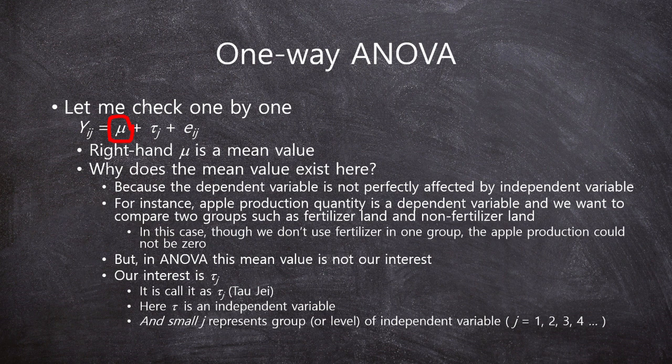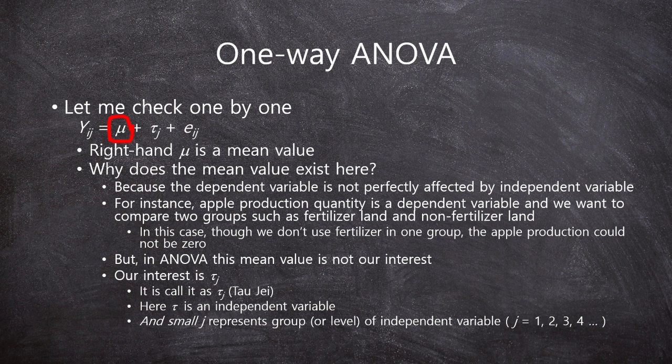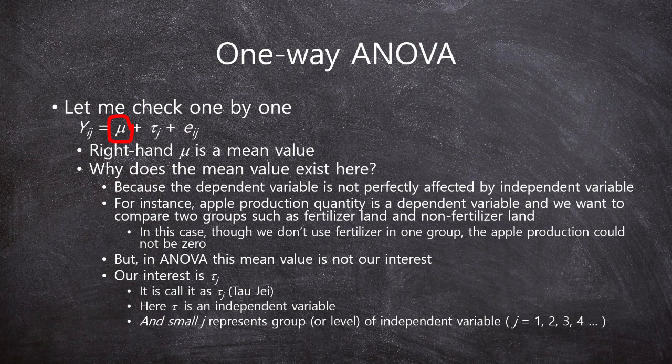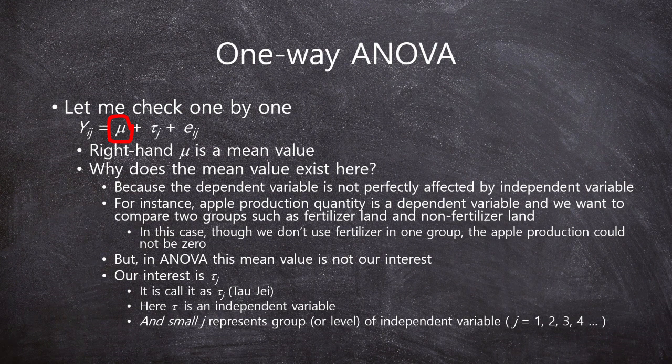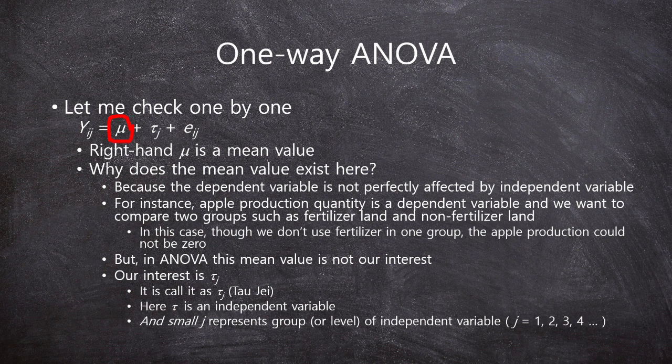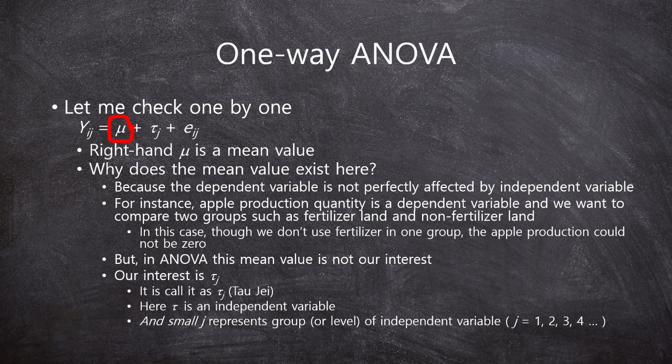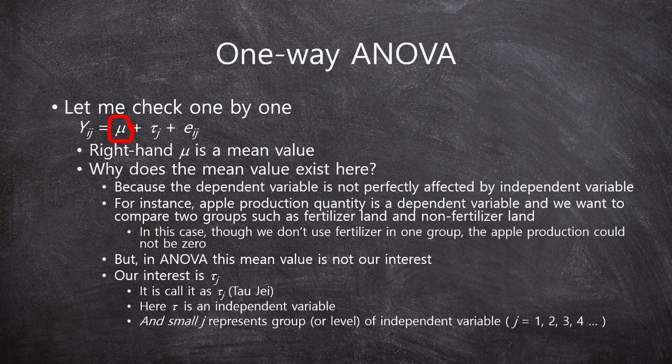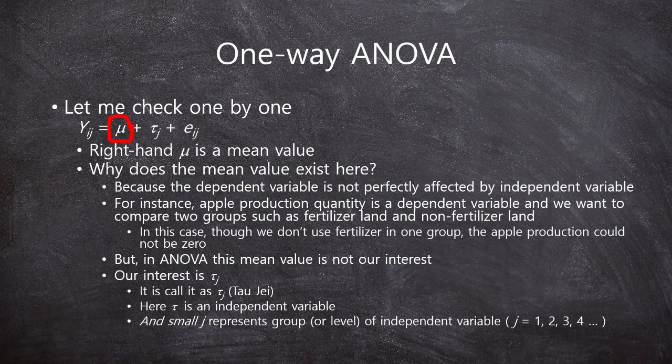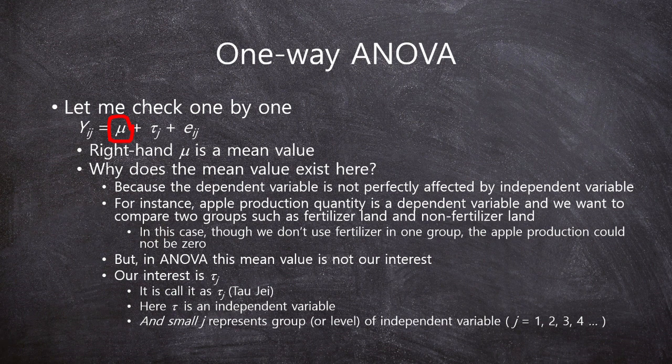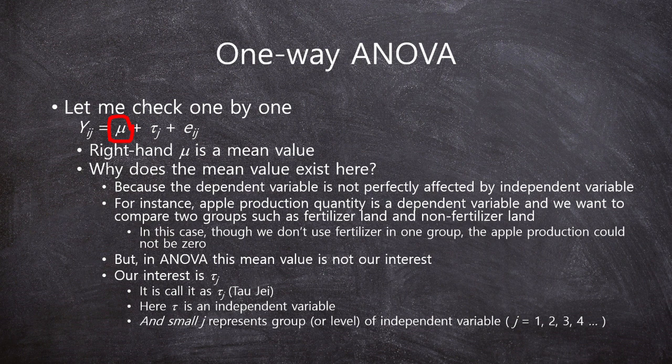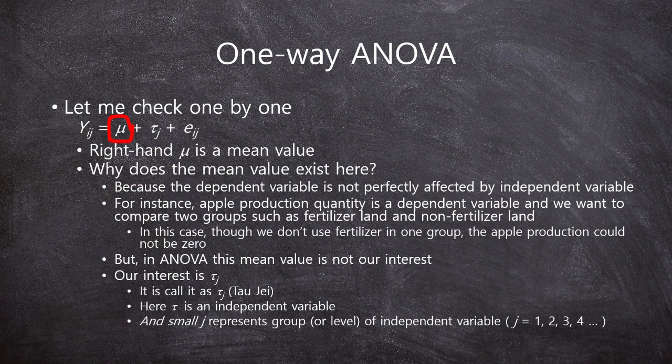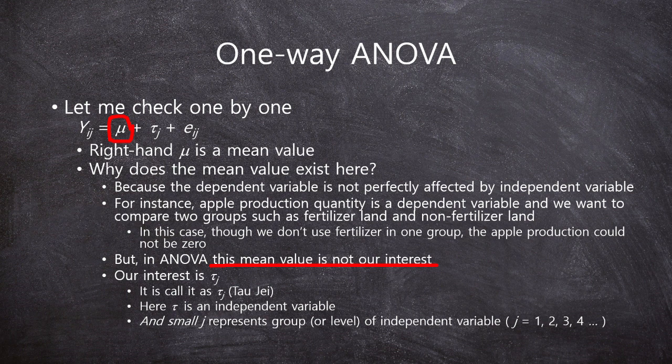Because the dependent variable is not perfectly, 100% affected by only one independent variable. It's impossible. For instance, apple production quantity is a dependent variable. And we want to compare two groups such as fertilizer land and non-fertilizer land. In this case, though we don't use fertilizer in one group, the apple production could not be zero. Because there is a natural average production quantity without fertilizer. So, we theoretically include the mu in this equation. But in ANOVA, in one-way ANOVA, this value is not our concern, not our interest.